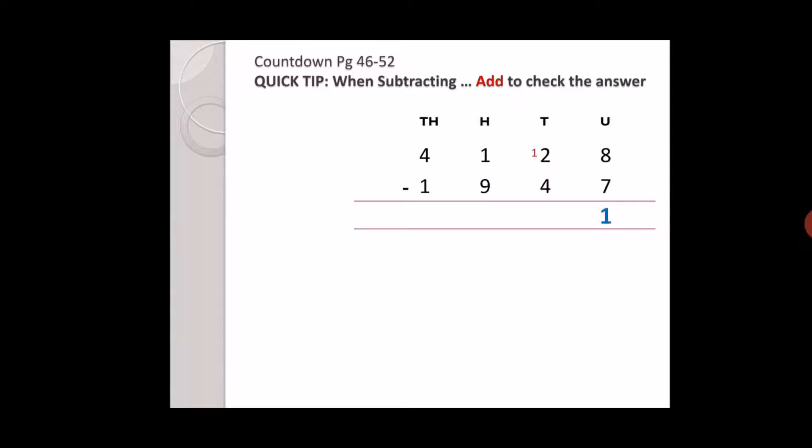Twelve, and in the hundreds place it becomes zero. Twelve minus four is eight. Zero minus nine cannot be done, so we borrow one from thousands, this becomes ten and in thousands place four becomes three. Ten minus nine is one, and three minus one is two. The answer is two thousand one hundred eighty one.